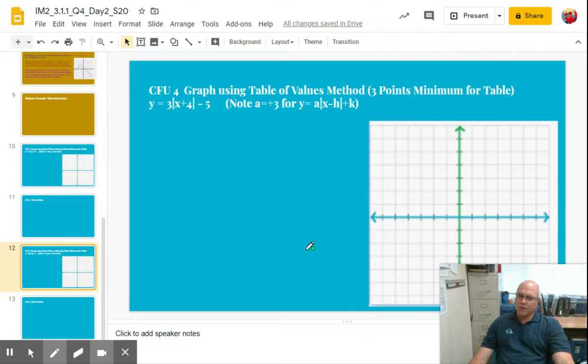All right, let's see how you did on CFU number 4. Y equals 3 times the absolute value of X plus 4 minus 5. So our A value is 3. Our H value is X plus 4, so it's X minus negative 4. So we know that H is negative 4. And our K value is going to be negative 5.